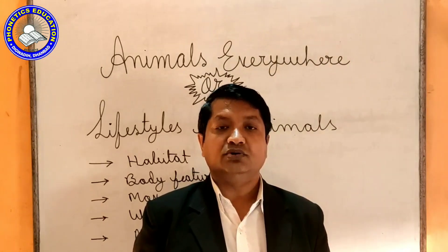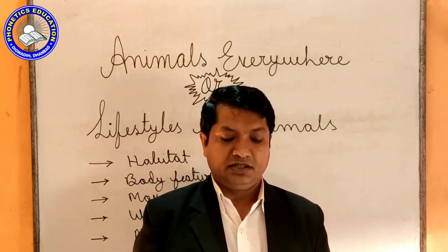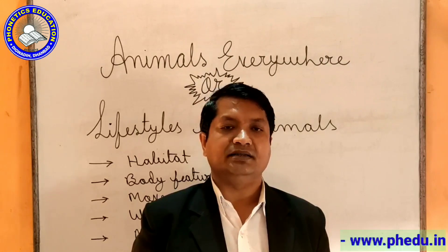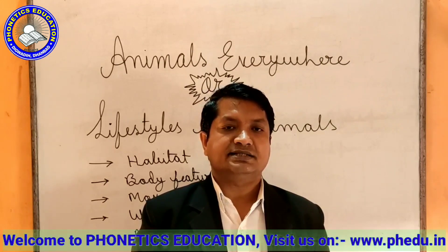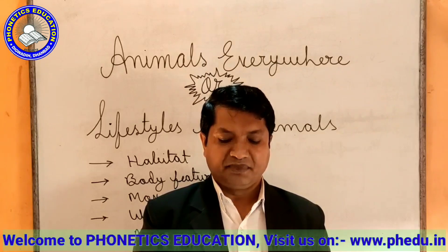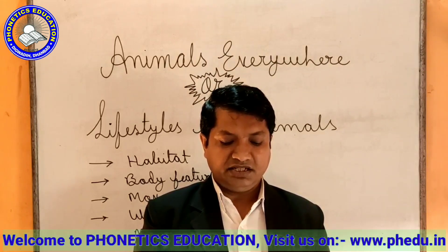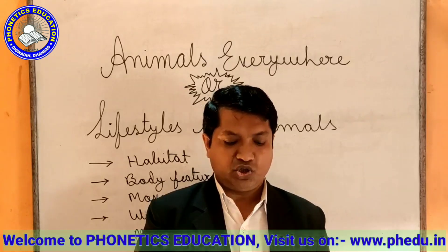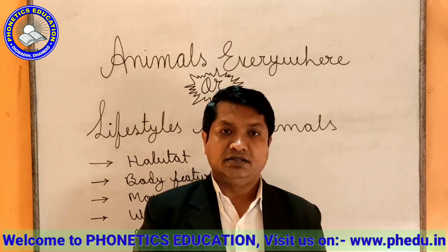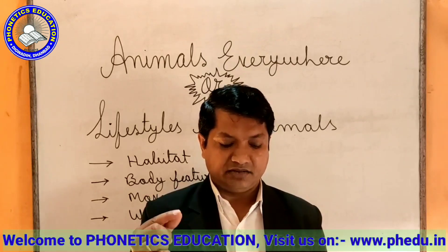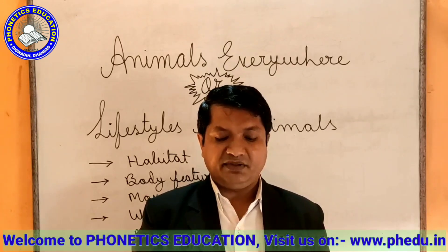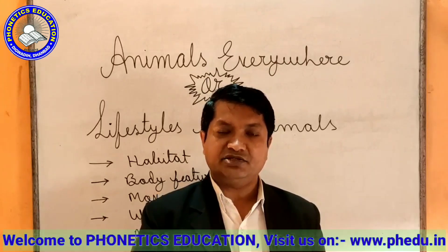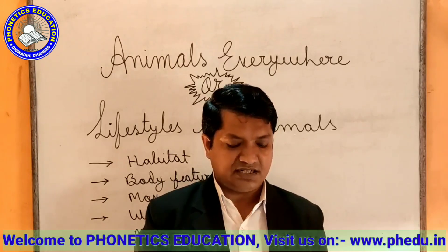Next: gills — jinko gulfad kaha jata hai. Water animals breathe through their gills. Jo janvars pani me rehate hain, woh sans apne gulfad ke dwara leate hain. Gills are thin and flat organs — ek patla aur choda organ. Rich is supplied with blood vessels — jismei khun ki maatra zyada hoti hai.